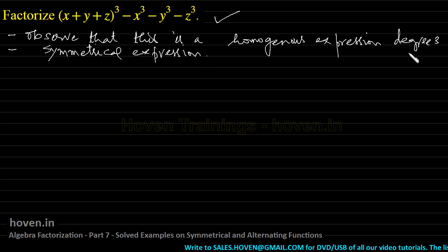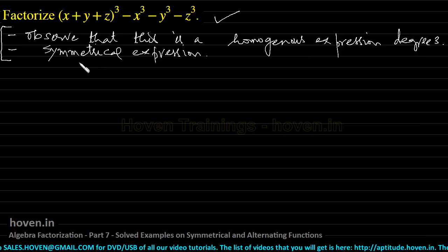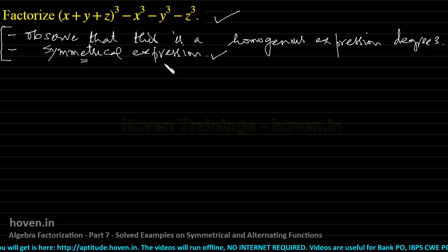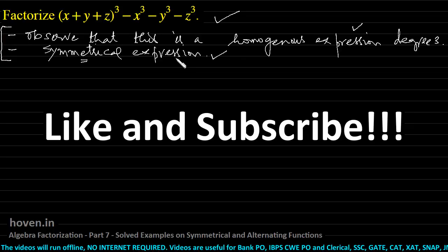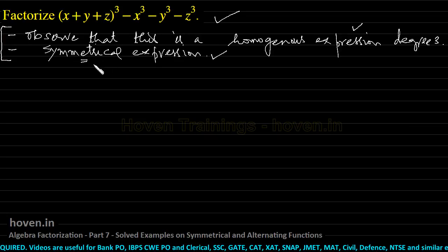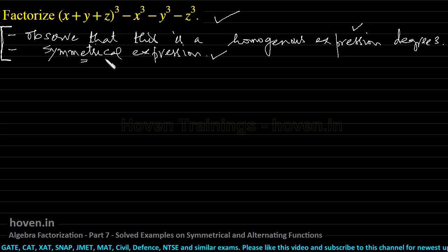So these are the two things we have observed. An expression will either be alternating or symmetrical, and if it is symmetrical or alternating, we can use the concepts related to symmetrical and alternating functions. In this case it is symmetrical. The second observation is that this is a homogeneous expression. We should write both observations at the top — whether homogeneous, symmetrical or alternating — and keep them in mind as we factorize.